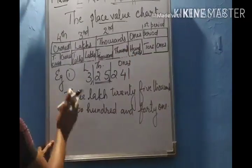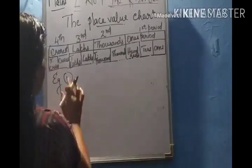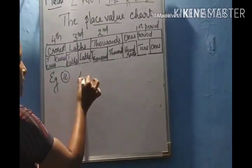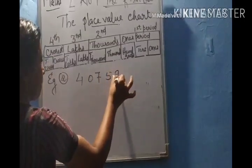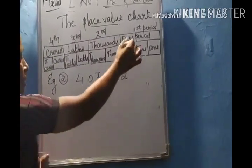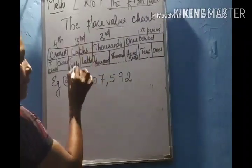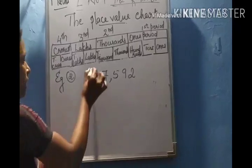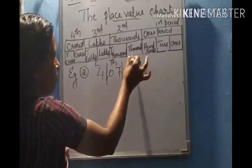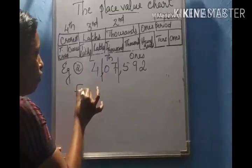We will show some more examples. Here also, first you have to place the comma in the correct place. The first comma comes after the first period of three digits: ones, tens, hundreds. Then thousands and ten thousands together. Then the lakhs period. The digit in the lakhs place is four, so it will be four lakhs.